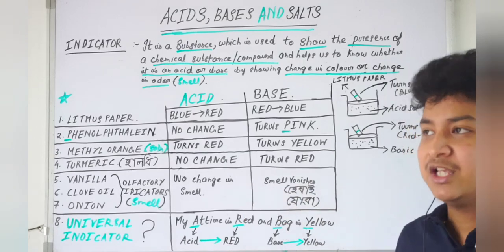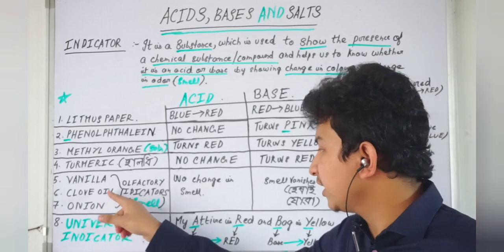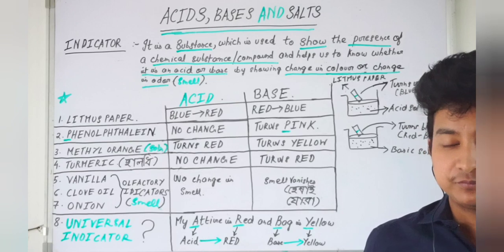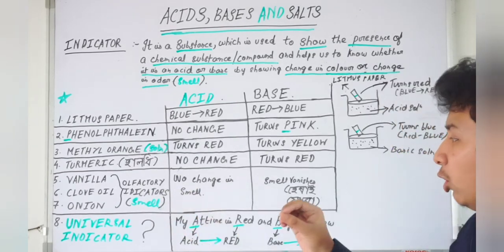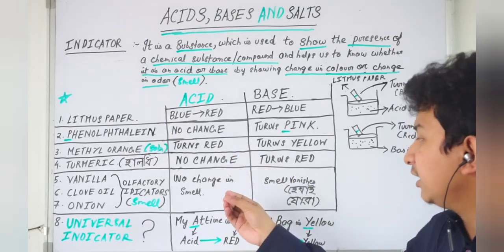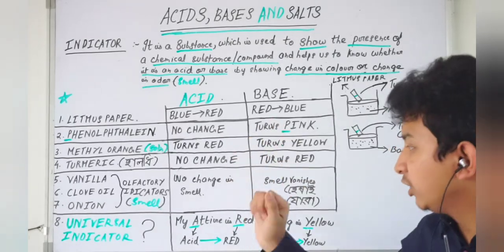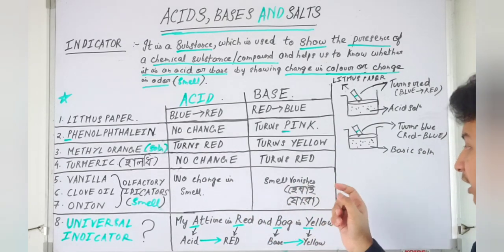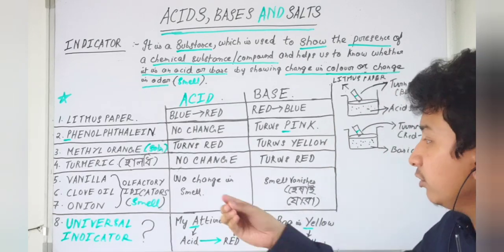The second olfactory indicator is clove oil. Clove oil has a characteristic smell. When we add a solution containing clove oil, its characteristic smell does not change in the presence of acid. But when the characteristic smell vanishes, we understand it is a base.